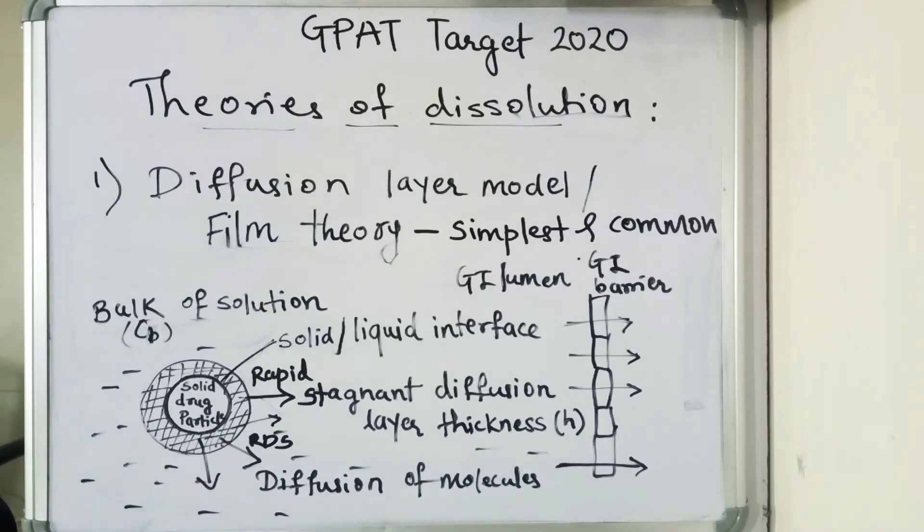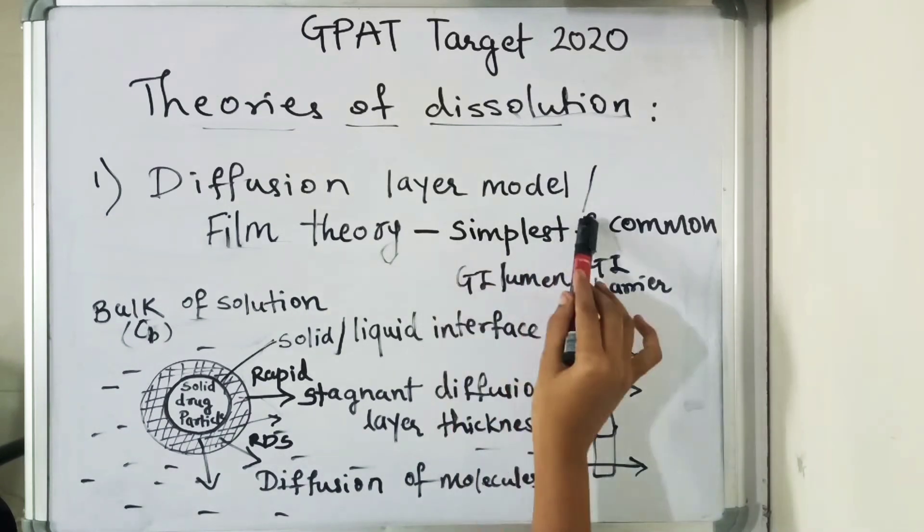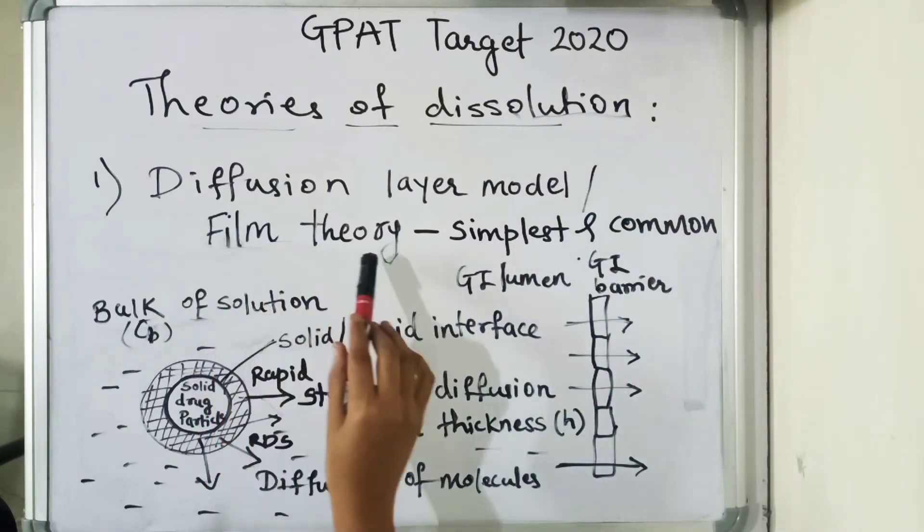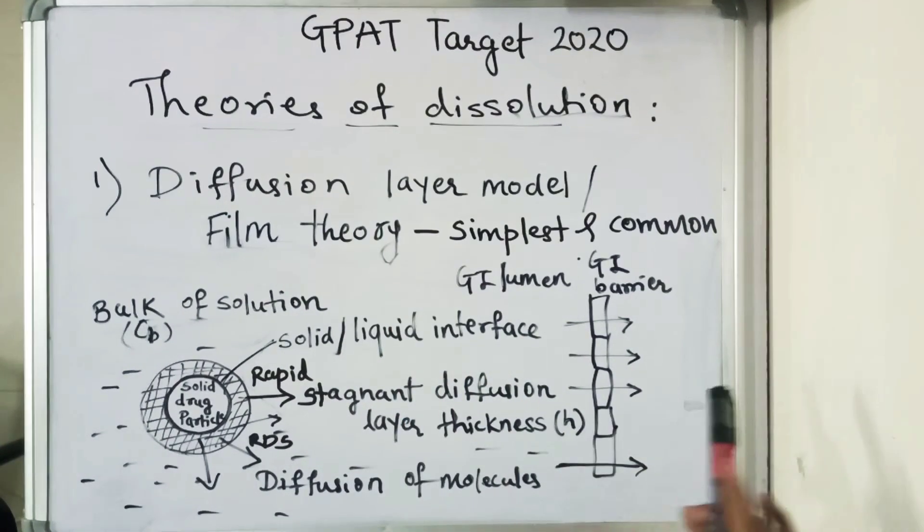First we will see diffusion layer model, also known as film theory. This theory is the simplest and the most common theory for dissolution. When a solid drug particle is immersed in a liquid without involving reactive or chemical forces, dissolution takes place. It takes place in two consecutive steps.